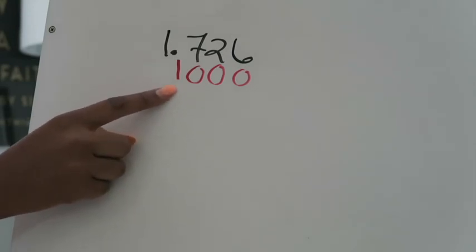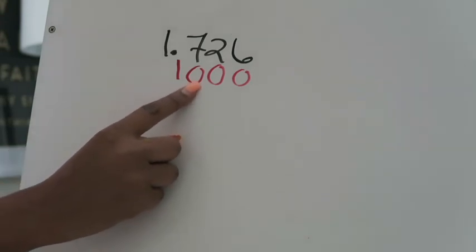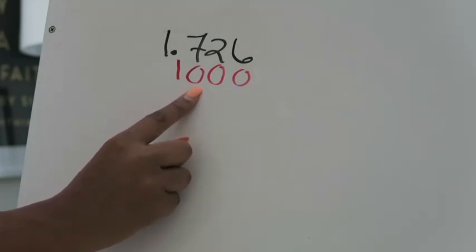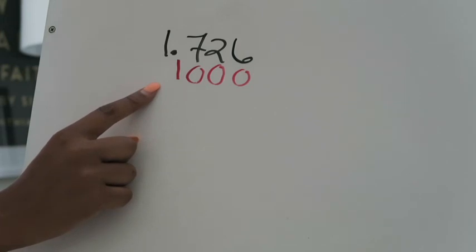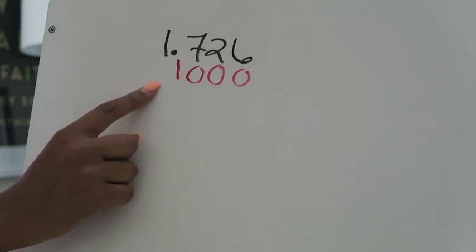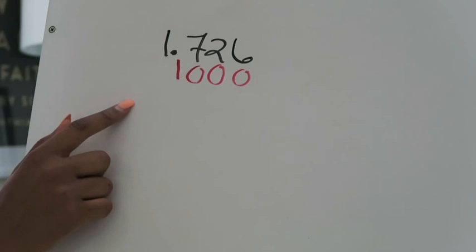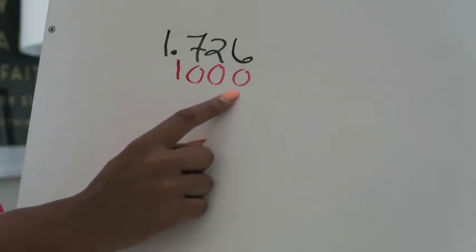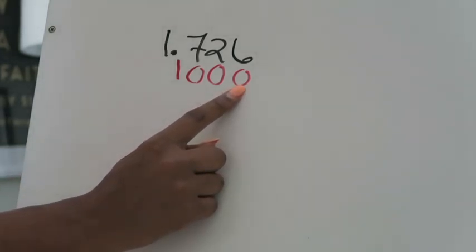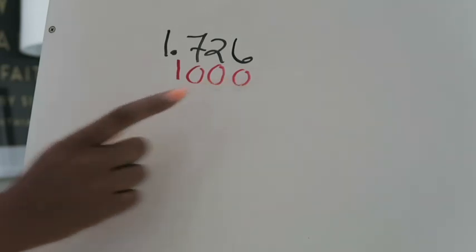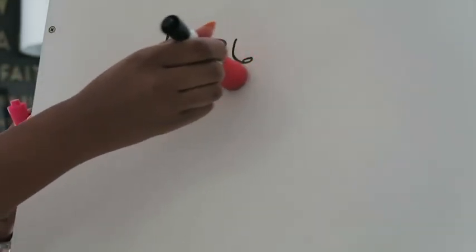So if someone asks what place value position the seven is in, I go to the seven, see the number 10 there, and know it's in the tenths place — worth seven tenths. For the two, I see 100, so it's in the hundredths place — worth two hundredths. For the six, I see 1000, so it's in the thousandths place — the value is six thousandths.